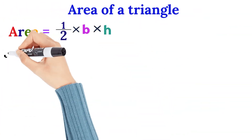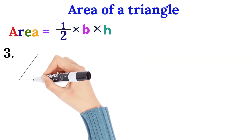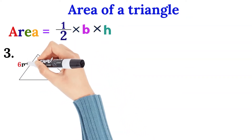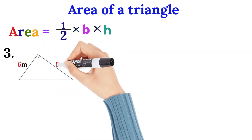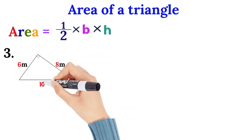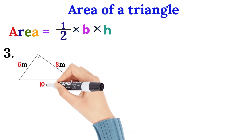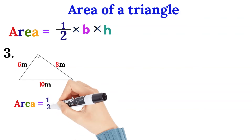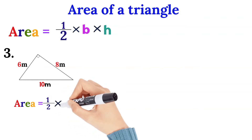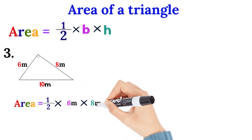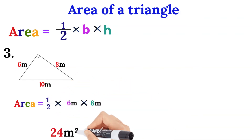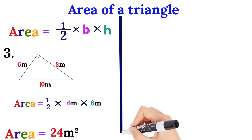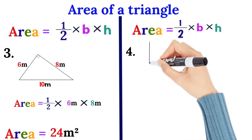Let's look at example number three. We are going to find the area using the base and the height. The base is 6 meters and the height is 8 meters. Half of 6 is 3. 3 meters times 8 meters gives us 24 meters squared.